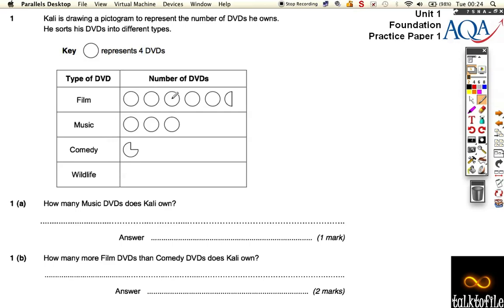So we know this is four, eight, twelve, sixteen, twenty. We know there was twenty-two films that he owns. If you count this up, this is four, eight, twelve music DVDs.